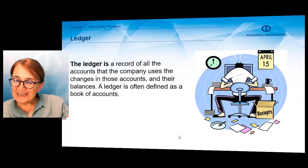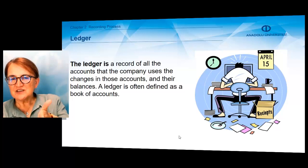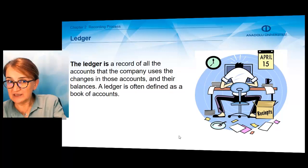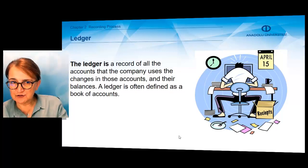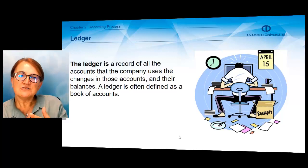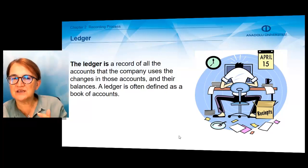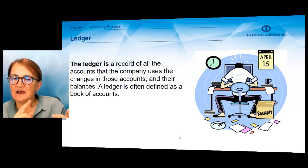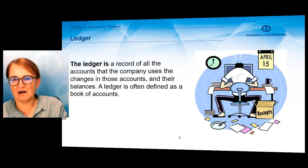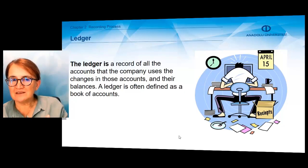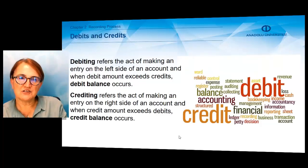For each specific balance sheet and income statement item, we will use separate accounts, but those accounts will be combined in the ledger. Ledger is a record of all the accounts that a company uses, the changes in those accounts, and their balances. Ledger is often defined as a book of accounts. One of the main accounting books is the general ledger.